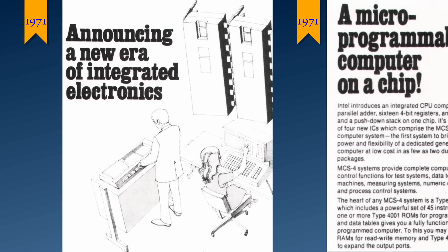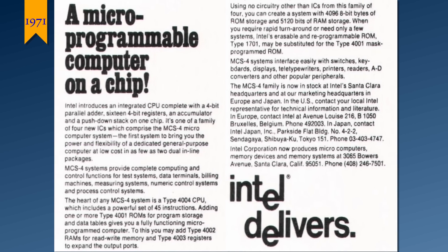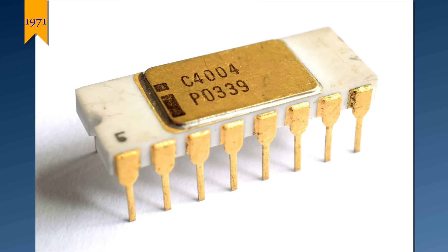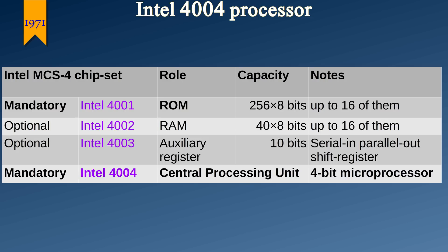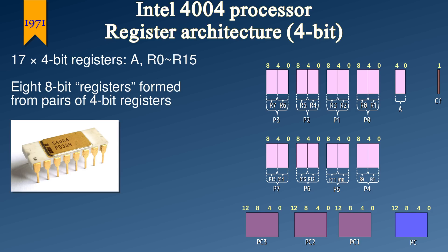In 1971, Intel Corporation made history. They released the first commercially available microprocessor, the Intel 4004. In a single beautiful ceramic package, it contained the heart of a design that would serve the world for decades to come. The reason why this was called 4004 was because this was part of a family of chips that together would form the core of a computer — the CPU was the fourth component of that series. This processor had 16 general purpose registers called R0 through R15, each of them 4 bits wide.